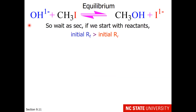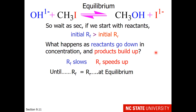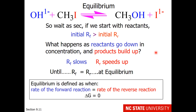Let's think about the reaction as it continues. If we start with reactants, the initial forward rate will be greater than the initial reverse rate. But as reactants go down in concentration and products build up, the forward rate will slow and the reverse rate will speed up until the forward rate equals the reverse rate at equilibrium. Equilibrium is defined as when the rate of the forward reaction equals the rate of the reverse reaction, or when the free energy change equals zero.